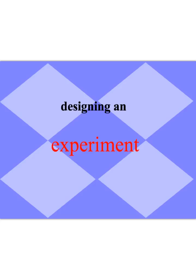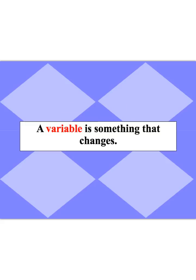Today we're going to look at the aspects of experimental design. It's going to be really important as we move through labs this year that you are very comfortable with these concepts and they should come fast and quick and become second nature for you. So when we design an experiment, our focus is going to be on our variables. A variable is just anything that can change. When we're designing an experiment, we basically have two variables we're focused on: our independent variable and our dependent variable.